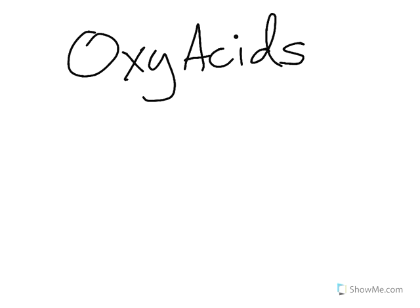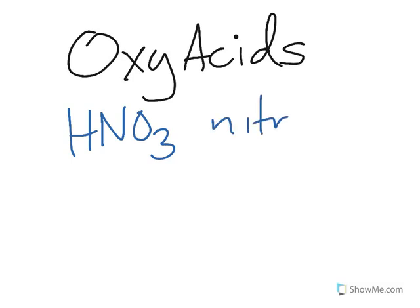So, for example, HNO3 is an oxyacid, and we call this nitric acid. Note that it has three oxygens in the formula, and that classifies it as an oxyacid.